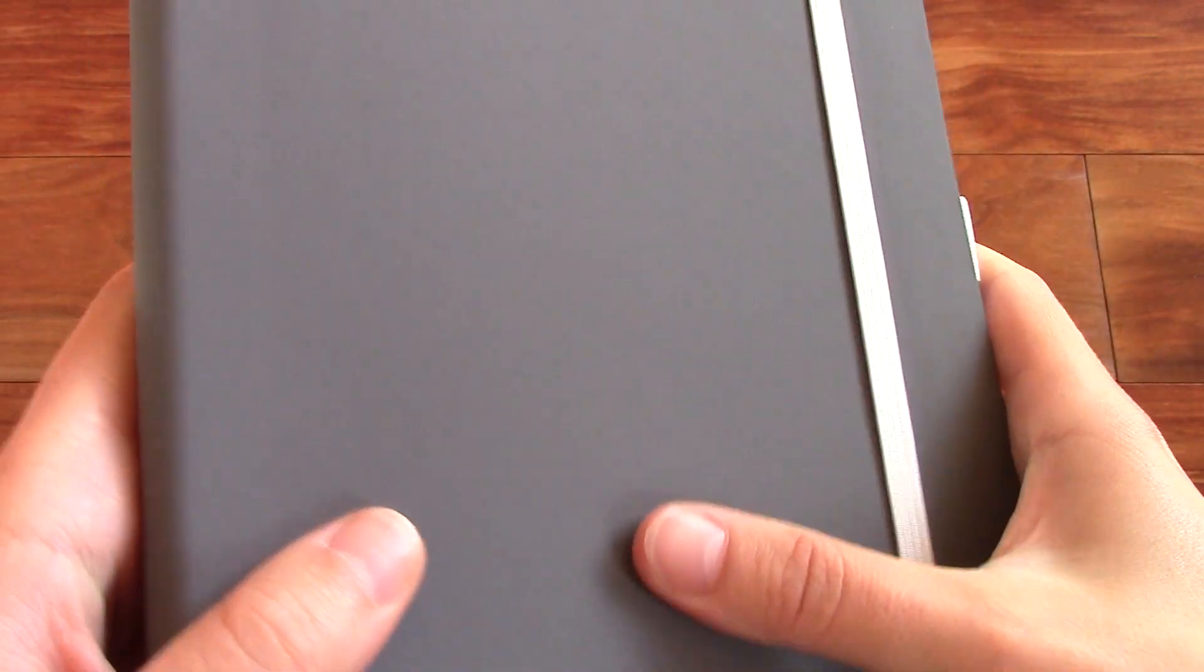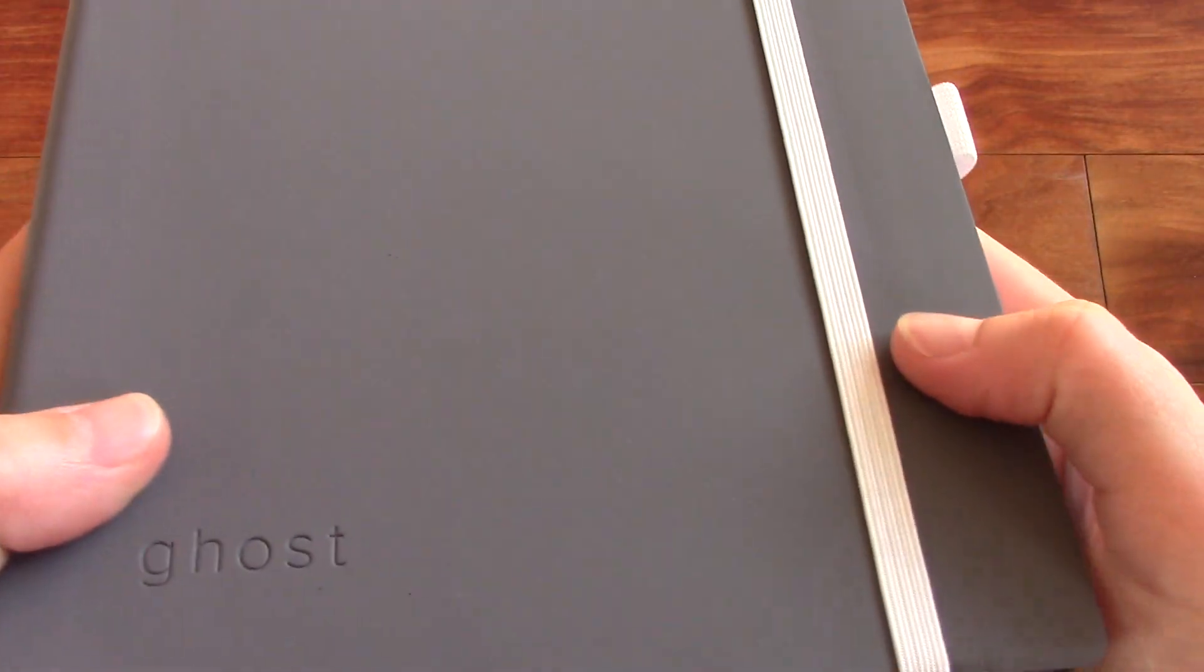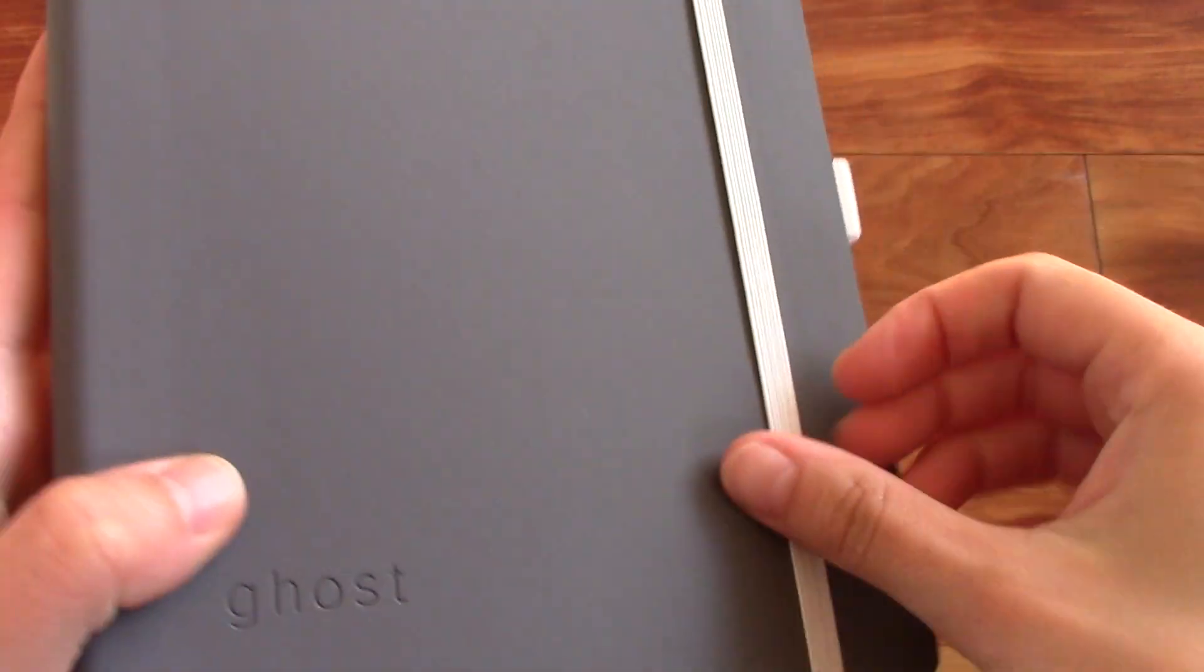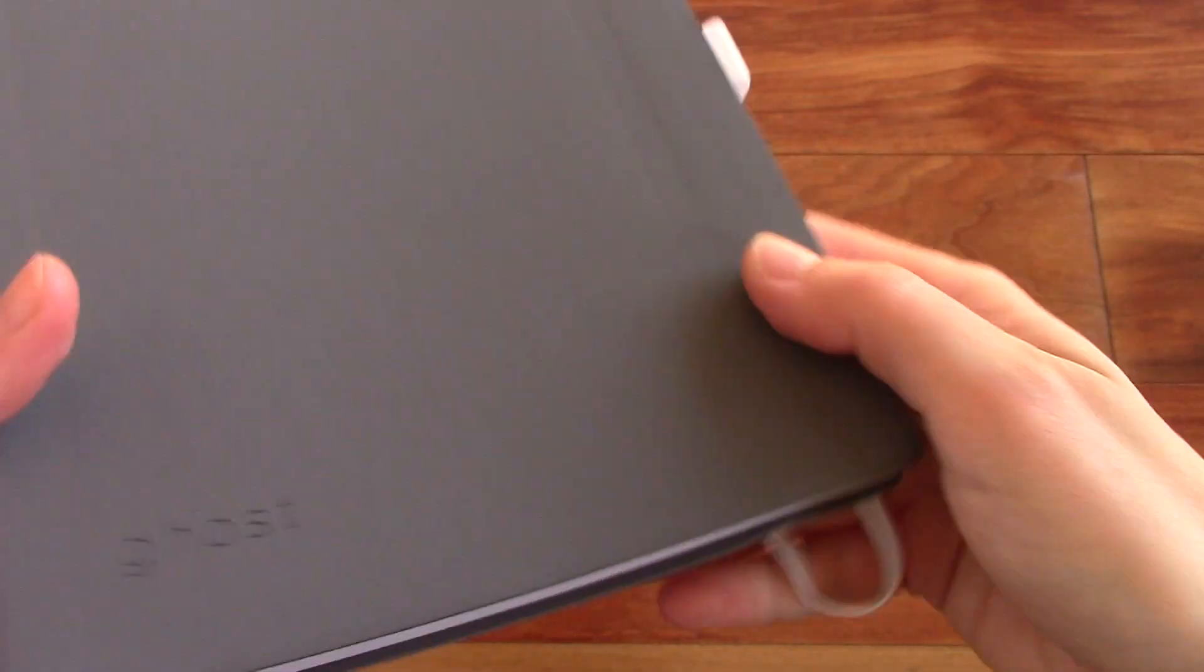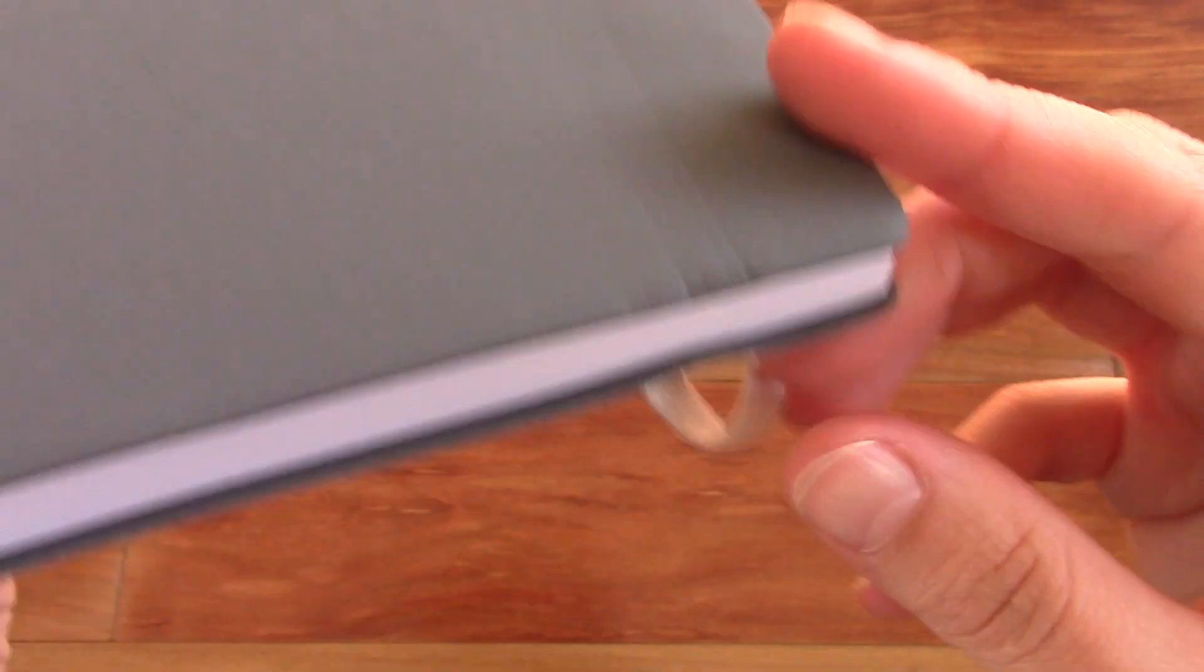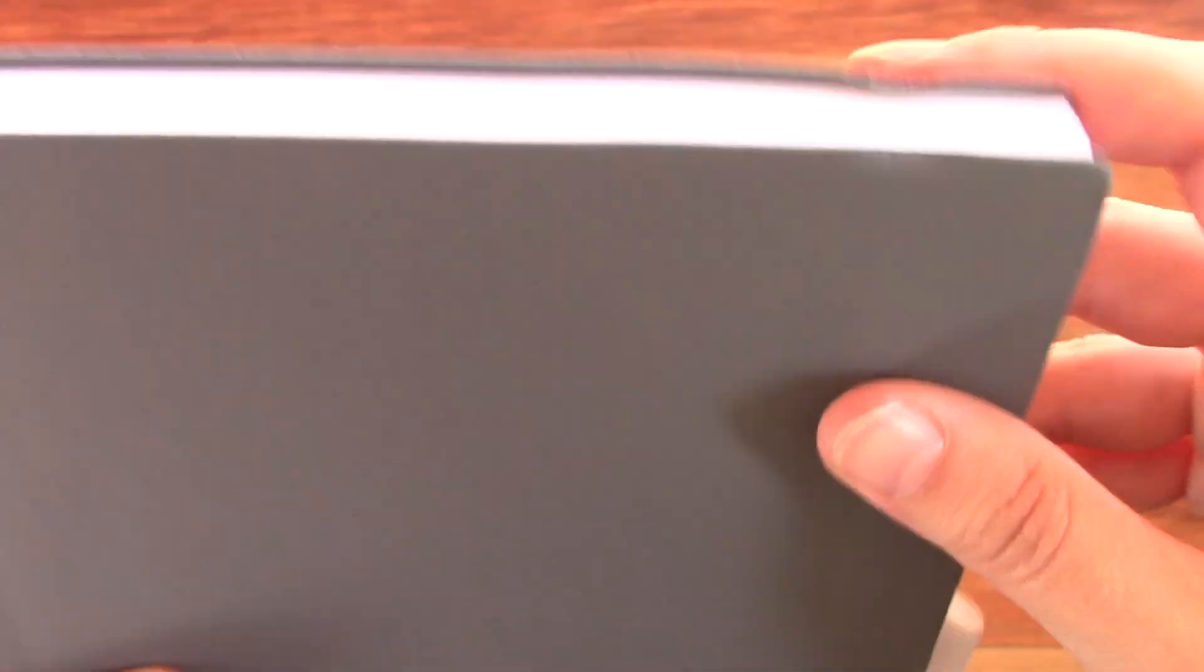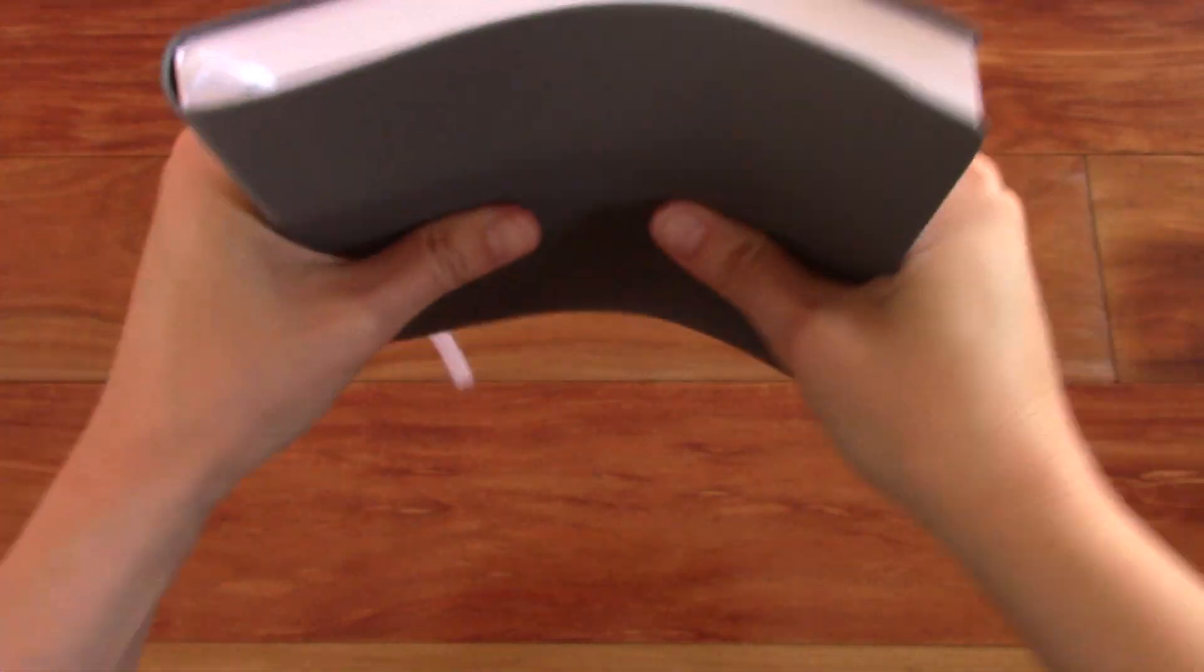It's a fairly smooth cover here as you can see and then it comes with a white elastic strap. Let's open this up and since the cover is quite soft there are some imprints from the elastic right here and also up there as you can see because it's a fairly thin cover and it's a quite flexible notebook as you can see.